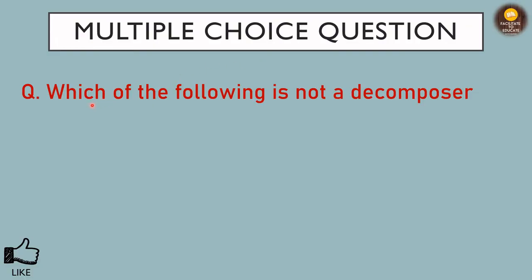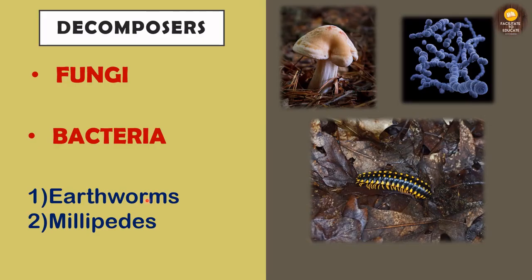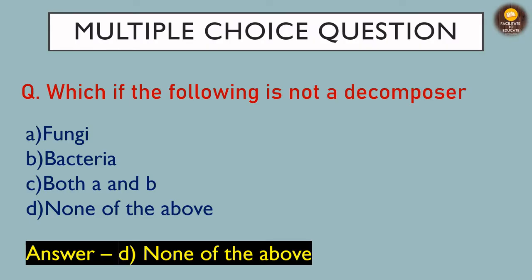Here is a multiple choice question: which of the following is not a decomposer? The options are: (a) fungi, (b) bacteria, (c) both A and B, (d) none of the above. From the previous slides we know that fungi and bacteria both release extracellular enzymes, so they are both decomposers. Therefore, 'both A and B' is incorrect, and the right answer is (d) none of the above. Major examples of decomposers include fungi, bacteria, earthworms, and millipedes.